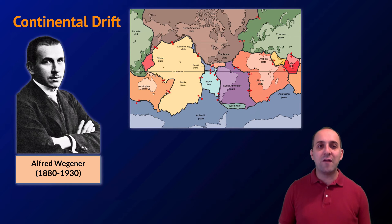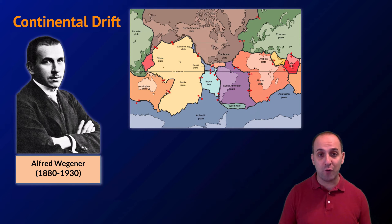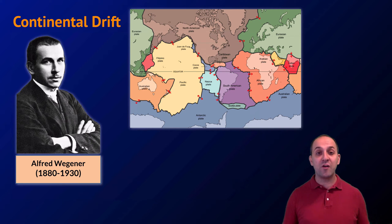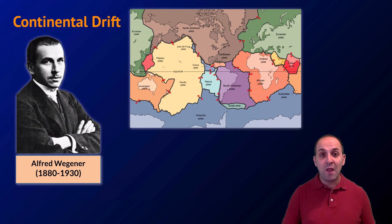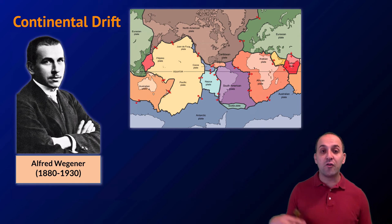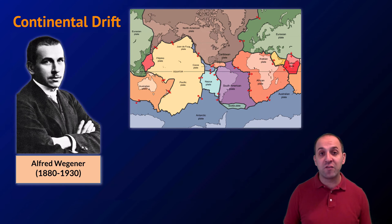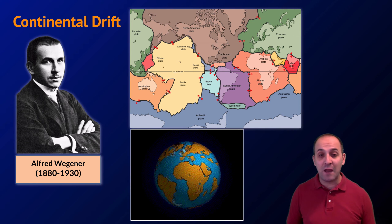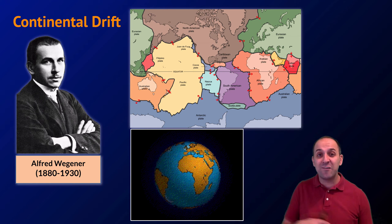Another major piece of evidence that supports Earth's history is continental drift. Continental drift is a foundational theory in the Earth sciences. We can simplify it into the understanding that the Earth's solid crust is broken up into a series of plates that sit upon a liquid mantle, and the long-term motion of these plates contributes to geological events such as earthquakes and volcanoes, but also is responsible for the long-term motion of the continents over hundreds of millions of years. We can also use continental drift to determine the arrangement of the continents tens of millions or even billions of years ago.